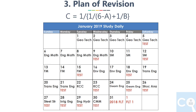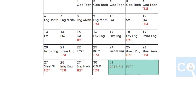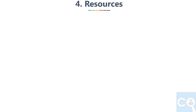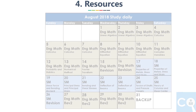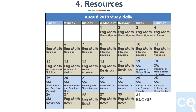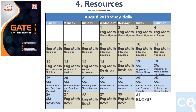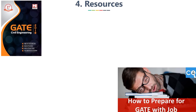Now see the January revision plan. A backup day and full-length test in February are also included. Try to solve the 2018 paper as a full-length test at this stage and analyze how many marks you would have scored if you had attempted that paper in 2018. For freshers and people who are doing a job, I would suggest crunching this timeline to 4 hours of study daily and focusing on previous year papers only.